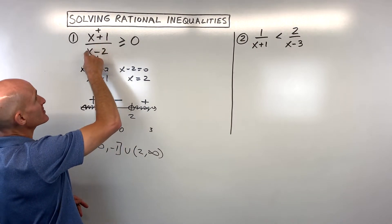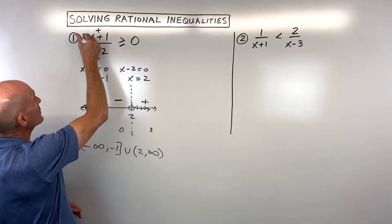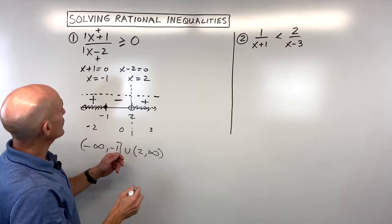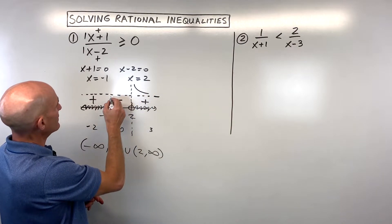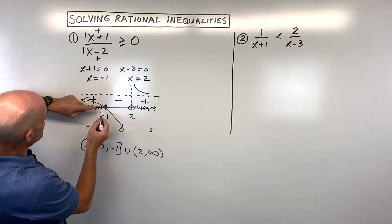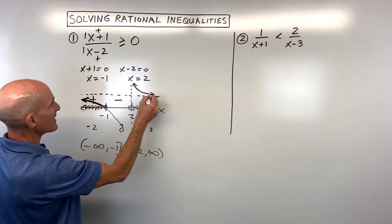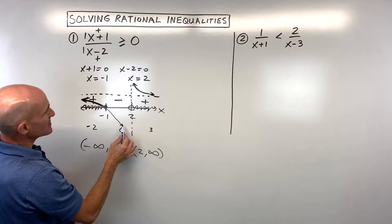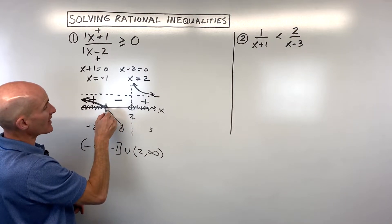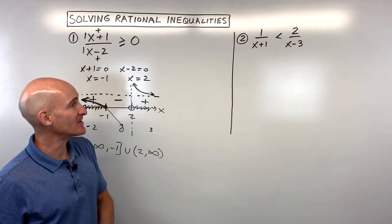You could graph this. If you graph it, you'll find a vertical asymptote at two and a horizontal asymptote at the ratio of the coefficients, one over one. The graph would look something like this. You're looking for where the graph is greater than or equal to zero — meaning where is it above the x-axis? You can see it's above the x-axis in two regions and below in one. That's why we don't include the vertical asymptote. Basically, we're taking a two-dimensional graph and analyzing it on a one-dimensional number line, which makes it quicker and easier.